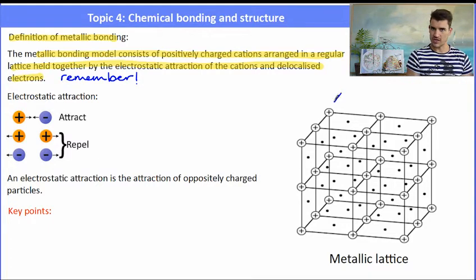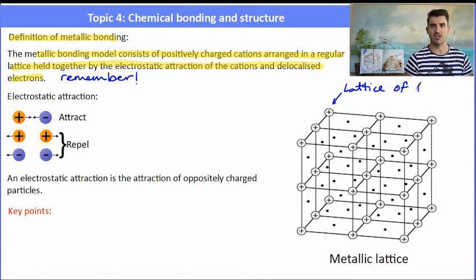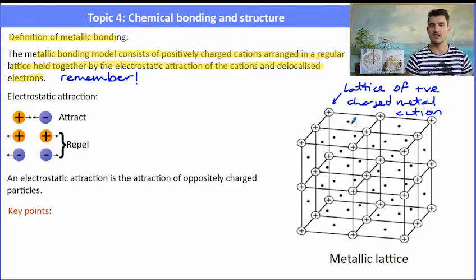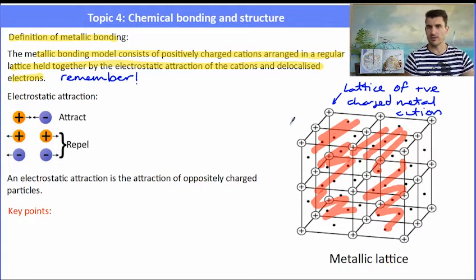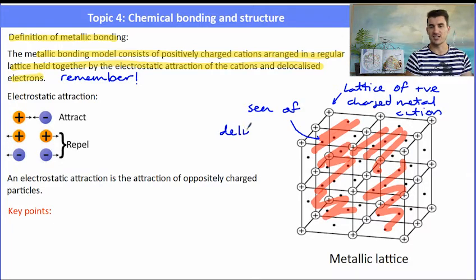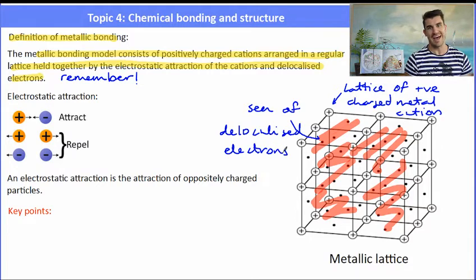The electrostatic attraction is the attraction between a positively charged ion and something that's negatively charged, and in this case the negatively charged species are the delocalized electrons. So a metal has positively charged cations in a regular lattice and then everywhere between those cations we have our delocalized electrons which I've tried to shade in in red here. They're moving around all the time in a random direction between the ions. They are delocalized. Where have they come from? They've come from the outer shell of the metal atoms.